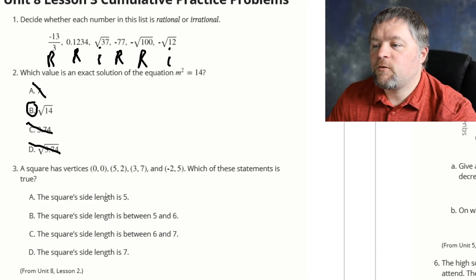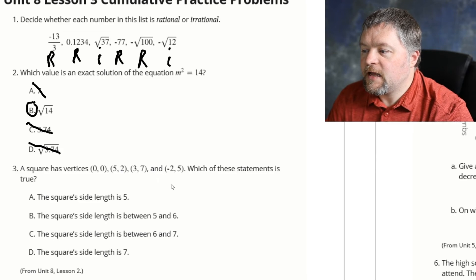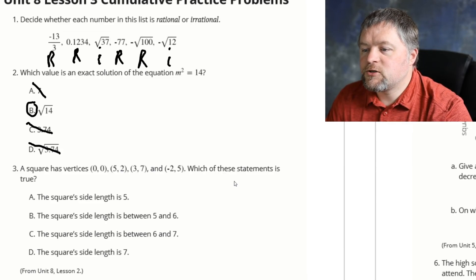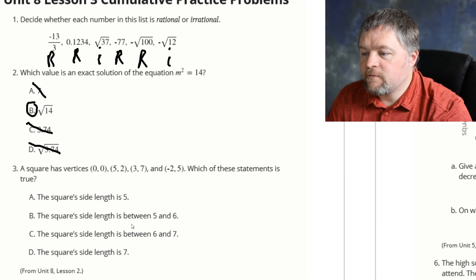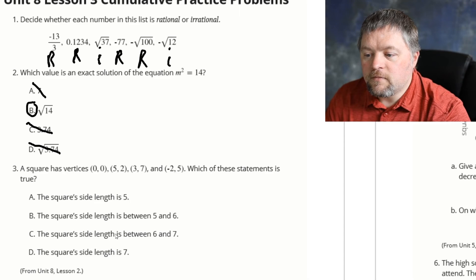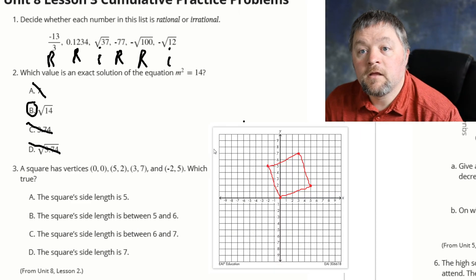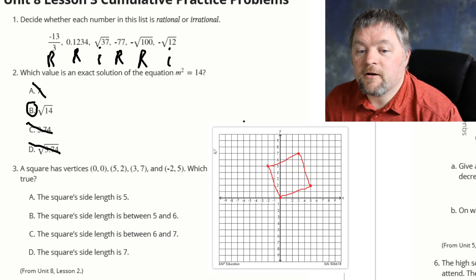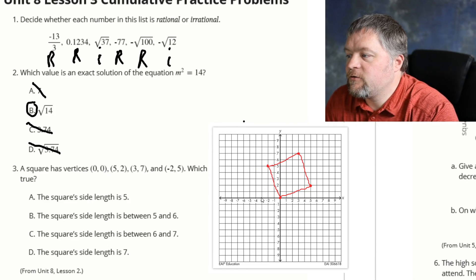A square has vertices 0, 0, 5, 2, 3, 7, and negative 2, 5. Which of these statements is true? The square's side length is 5. The square's side length is between 5 and 6. The square's side length is between 6 and 7. The square's side length is 7. Well, how do you suppose we could answer this? To answer this question, we are going to need graph paper. Ta-da! Through the magic of technology, graph paper.